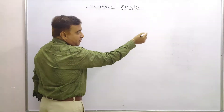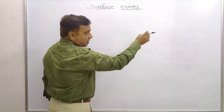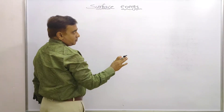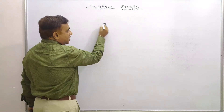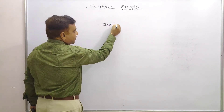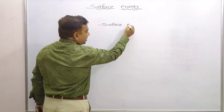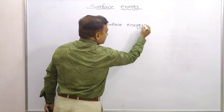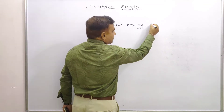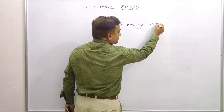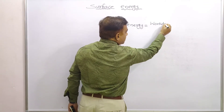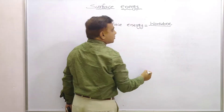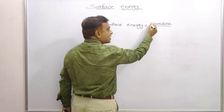As shown in the diagram, the molecule goes outside and takes its new position at the surface — hence surface energy. Surface energy is nothing but the work done by the molecule which is inside the liquid to take its position at the surface.